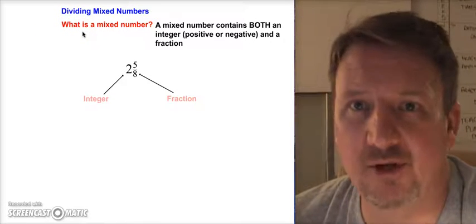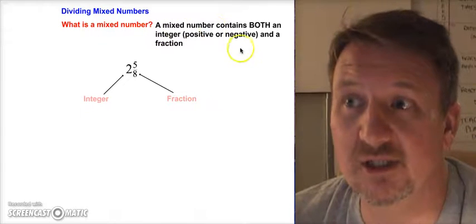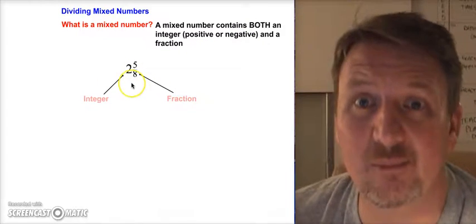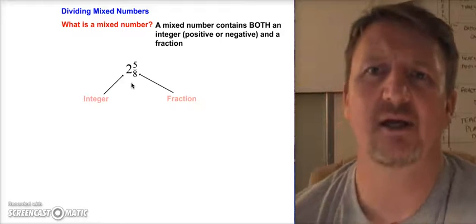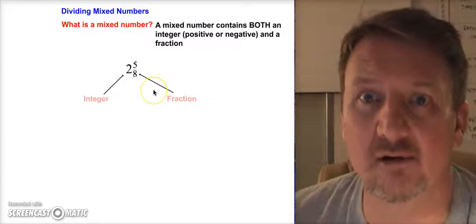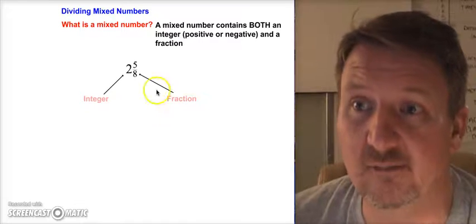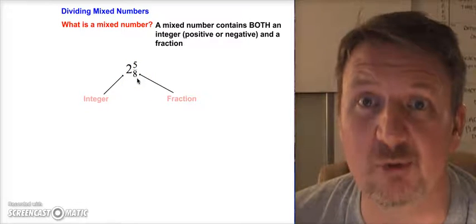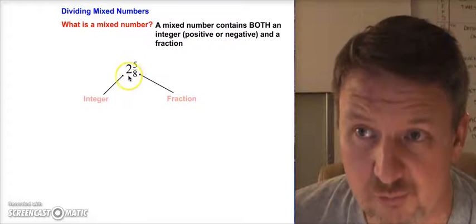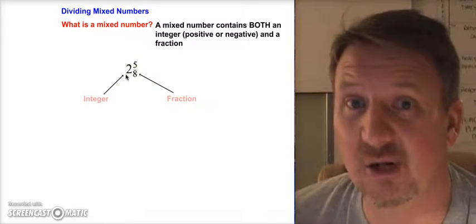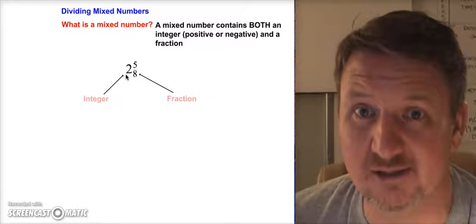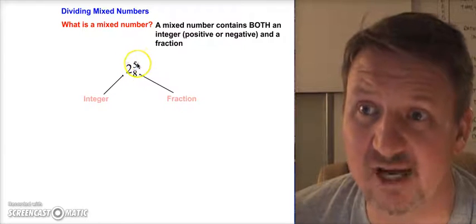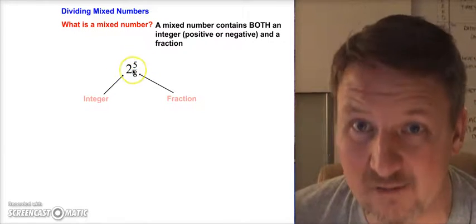First thing you may ask: what is a mixed number? A mixed number contains both an integer — whether it's positive or negative — and a fraction. For example, two and five-eighths is a mixed number. The two is your integer, which can be positive or negative, and five-eighths is your fraction. Together they form a mixed number.